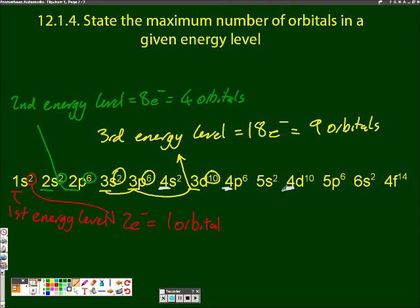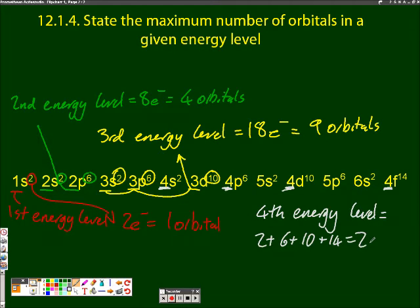And finally for the IB, the fourth energy level: s, p, d, and f. Accounting for all the electrons present gives me 32 electrons, which means 16 orbitals.